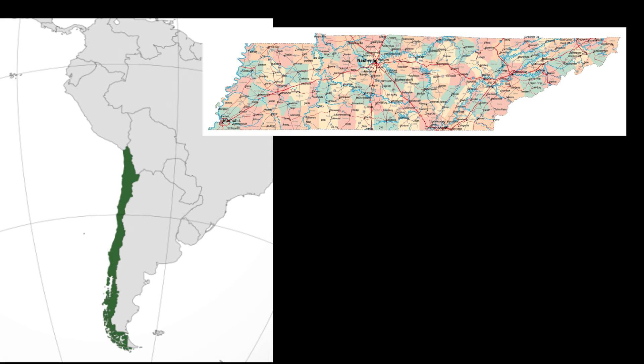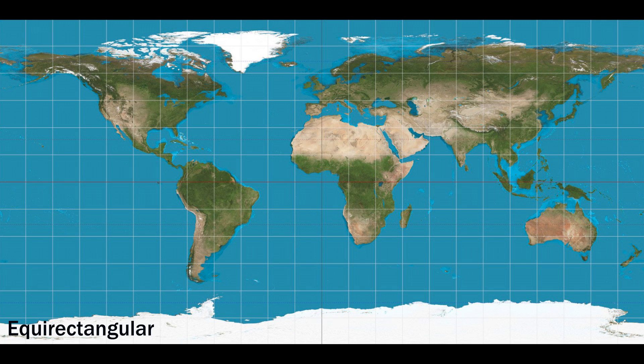Another equidistant projection is called the equirectangular projection. As the name implies, every rectangle on the map is equal-sized. It has some of the properties of a Mercator, but does not have conformal shape and is also not equal area. As a result, it doesn't really have any practical uses and is often just used for thematic reasons.